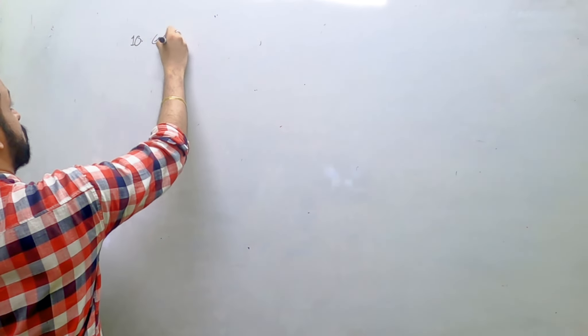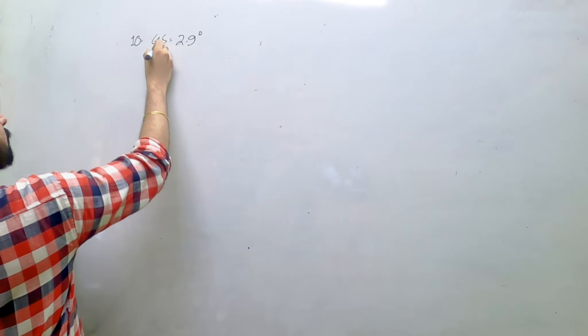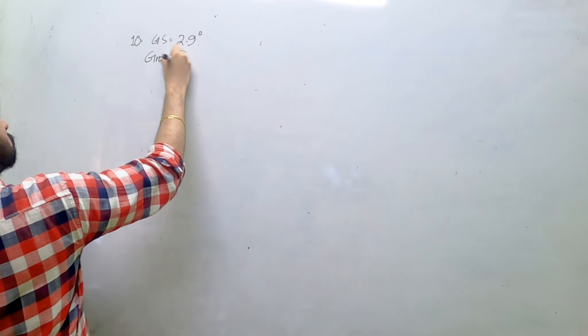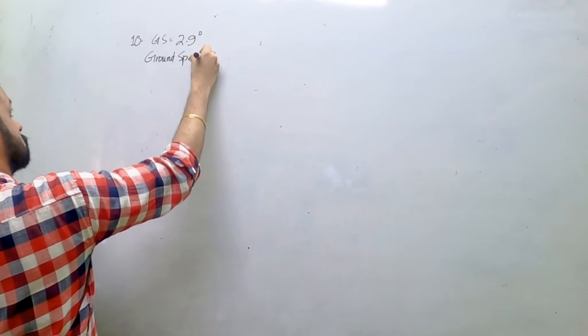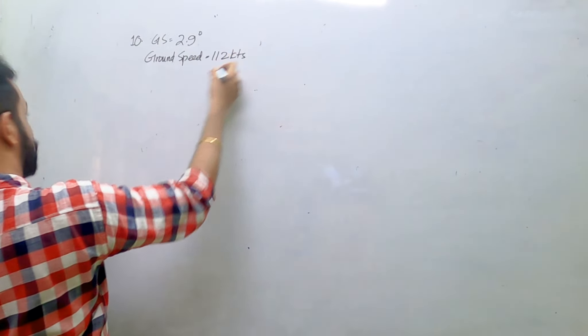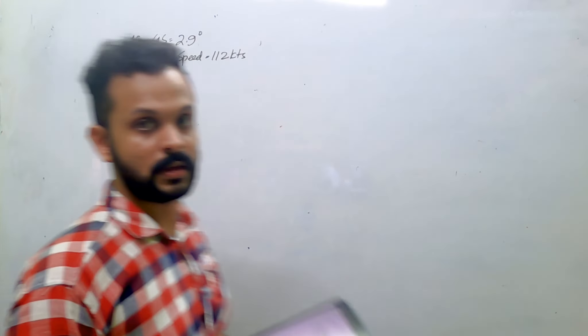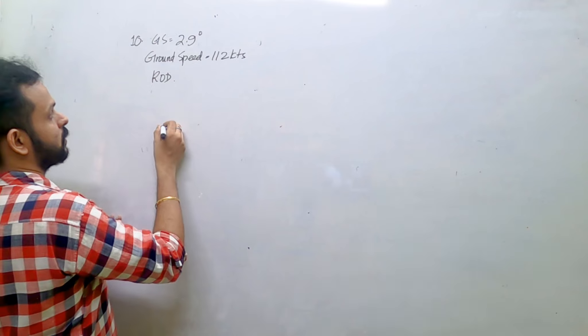A glide slope of 2.9 degrees, ground speed of 112 knots. You have to find out the rate of descent. So the glide slope is 2.9 degrees, the speed is 112 knots. Find the rate of descent. I'll give you some time.